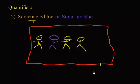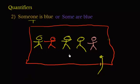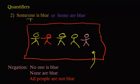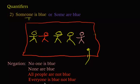So what would be the negation? If I claim that someone is blue, the only way you could catch me in a lie is if you find that no one is blue. So the true negation of someone is blue is no one is blue. You can also say none are blue, all people are not blue, or everyone is not blue — these all mean the same thing.